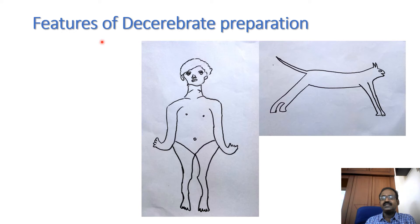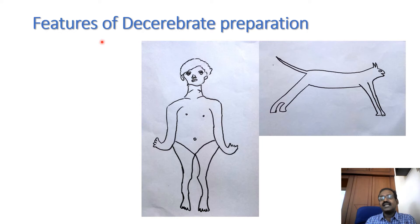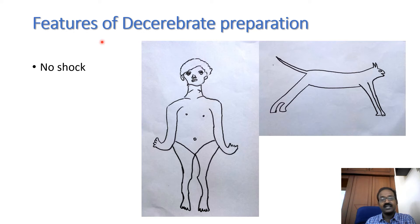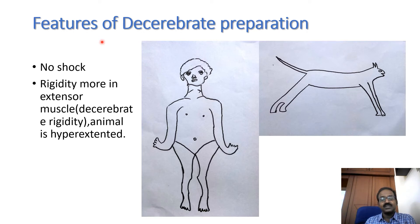Decerebrate rigidity means rigidity mainly occurs in the extensor group of muscles. The extensor group of muscles are anti-gravity muscles. They are important for maintaining the tone and posture of muscle movement. This is affected when the decerebrate preparation is made. The rigidity is more in the extensor muscles, and that is called decerebrate rigidity.